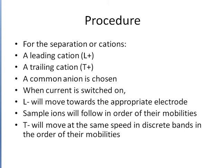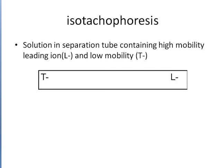So iso means the same, tachyo means speed, and phoresis means separations — this is isotachophoresis. This is a very important technique. In isotachophoresis, L is the leading ion with high mobility, and T is the trailing ion with lower mobility.